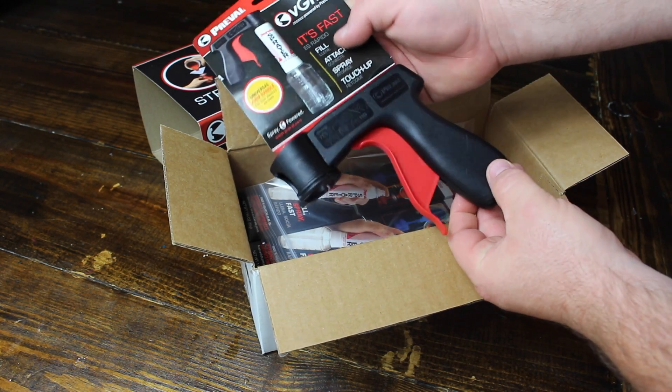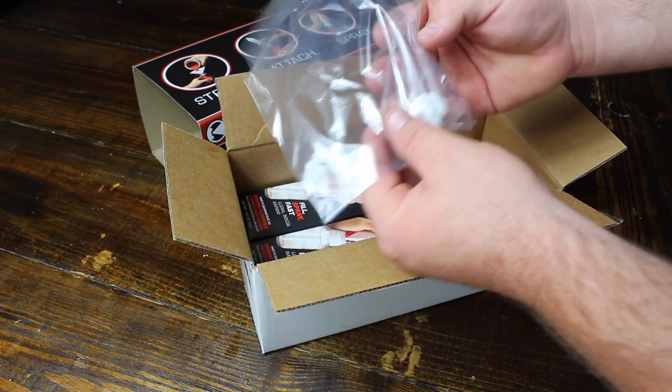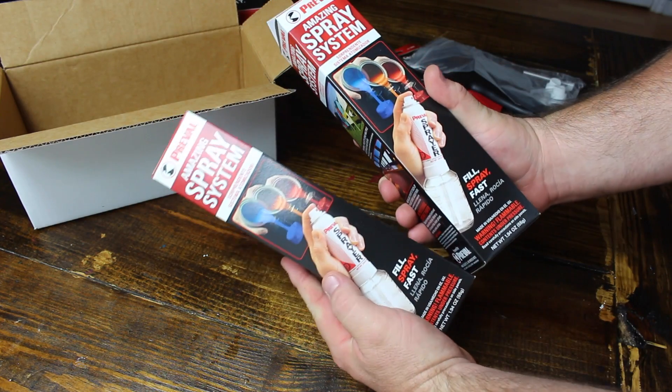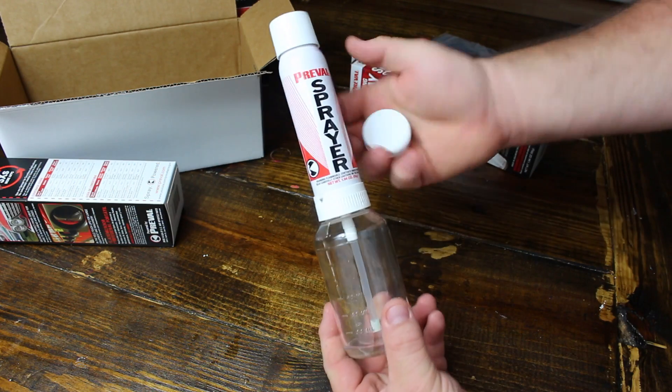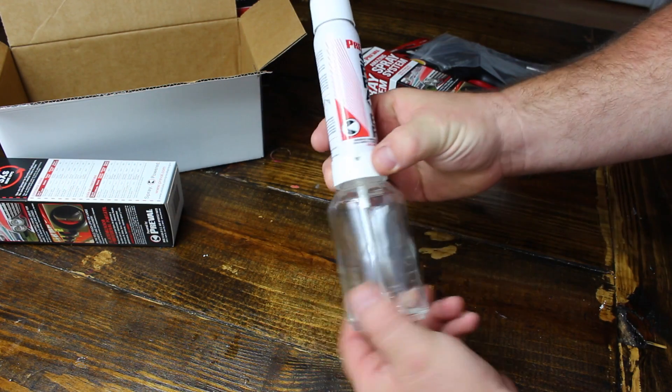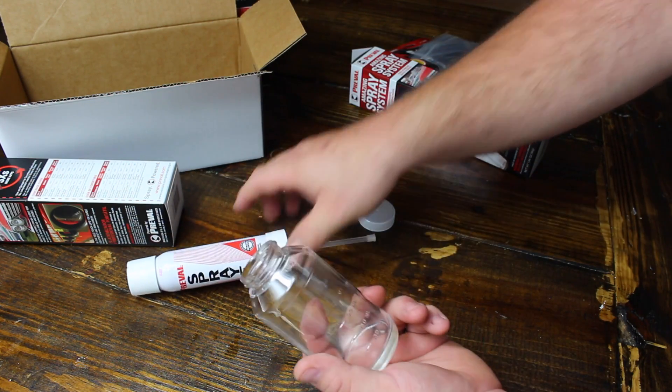In the package it came with a spray grip handle, two extra nozzles, and two pickup tubes for the spray systems. Each spray system contains an aerosol can and a glass jar that you can mix your paint in.